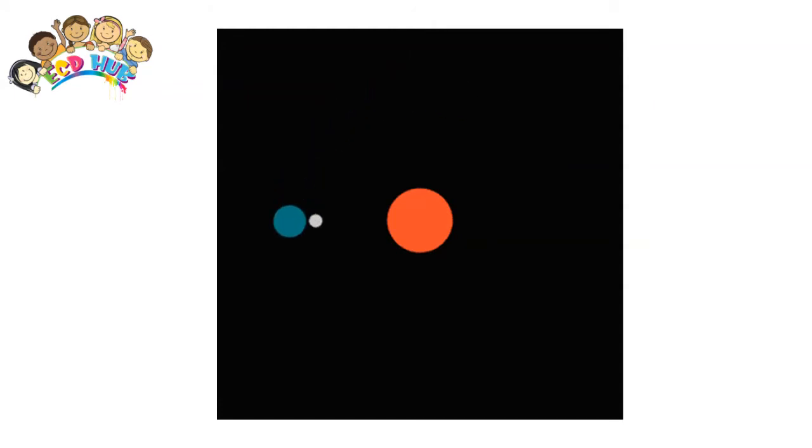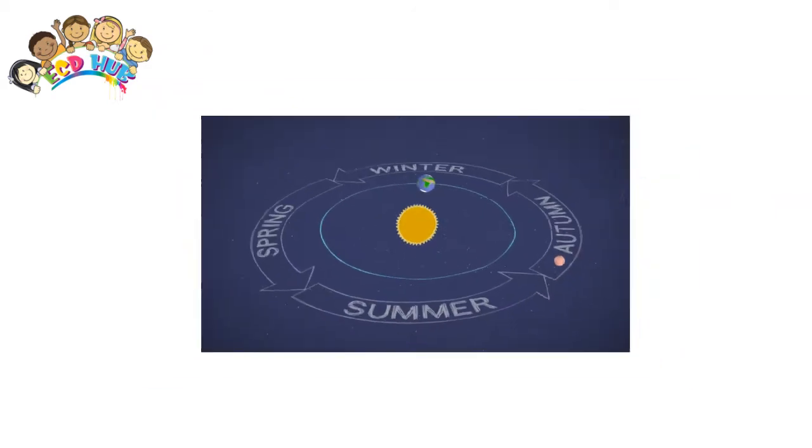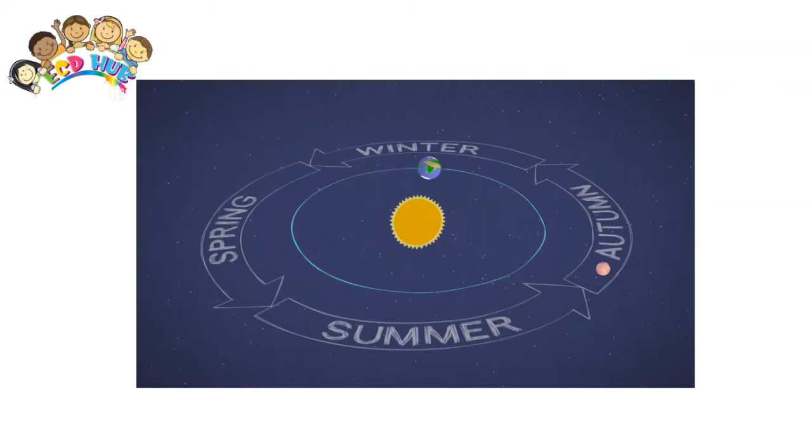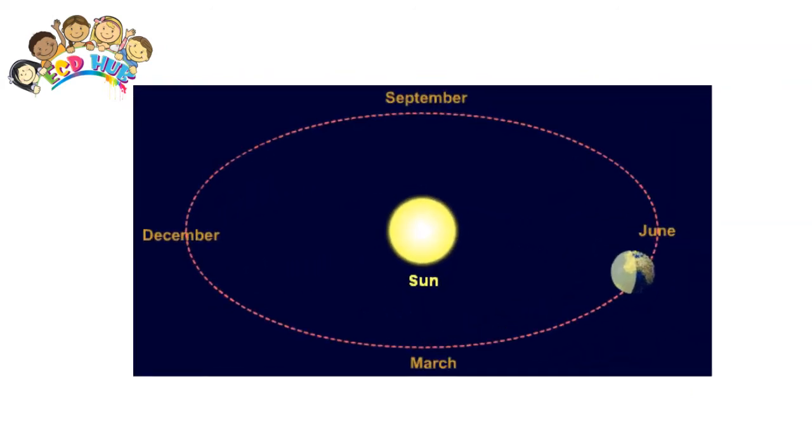However, the Earth doesn't rotate in a straight up and down manner relative to the Sun. It is slightly tilted. In scientific terms, the Earth is tilted 23.5 degrees from its orbital plane with the Sun.